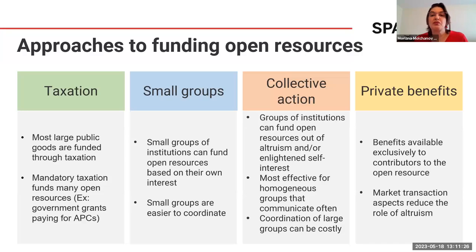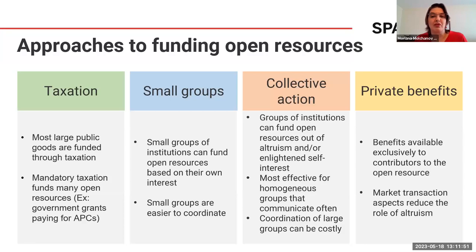The approaches to funding open resources usually fall under one of four categories or a combination of them. The first is taxation — nobody likes taxes, but most public goods are funded through taxation: freeways, defense, clean air. When it comes to open resources, taxes can pay for them through government grants. APCs can be charged to grants, and some governments can cover agreements with publishers to fund open resources.